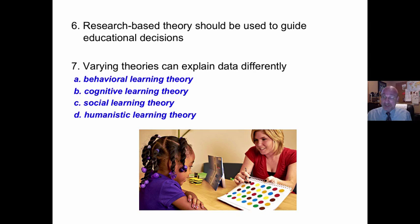Varying theories can explain data differently. Behavioral, cognitive, social learning theories, humanistic learning theories - they all describe a somewhat different set of data dots with some overlap.